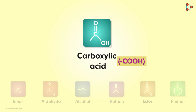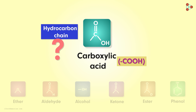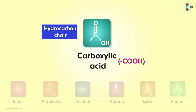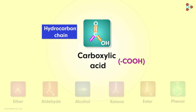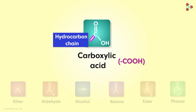Now, where will this group be attached to the hydrocarbon chain? From the carbon atom. We know that the valency of carbon is 4. Three bonds in the functional group have already formed, leaving behind just one. That is why the line is drawn before the carbon atom, which indicates that the group can be attached from here.